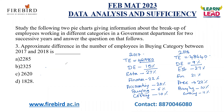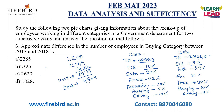Next question: approximate difference in the number of employees in the buying category between 2017 and 2018. In 2017, 6% of buying: 10% is 4,298; 5% is 2,149; 1% is 430. So 6% gives 2,579. In 2018, buying is 10% of 48,640, which is 4,864. The difference is 4,864 minus 2,579. Calculating: 4,864 − 2,579 = 2,285 employees. That is the difference in the buying category between both years.